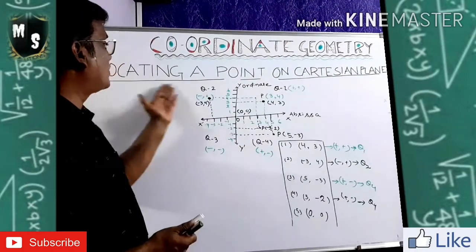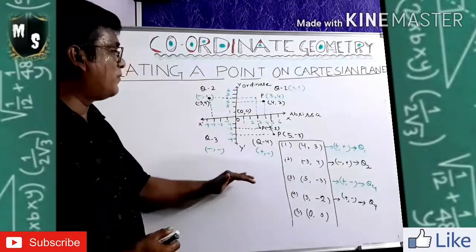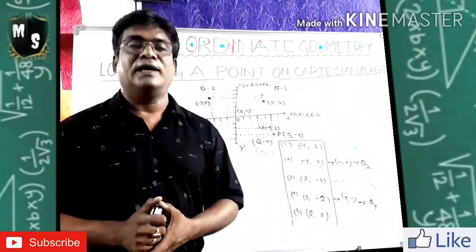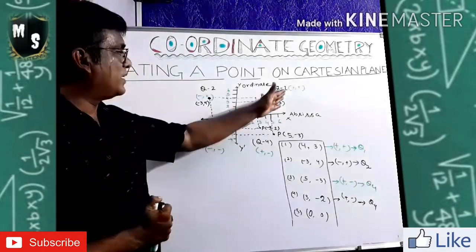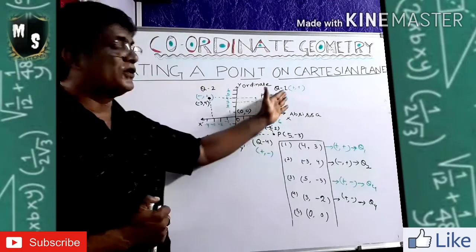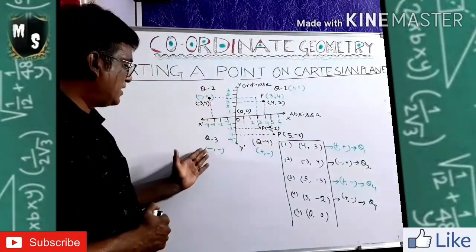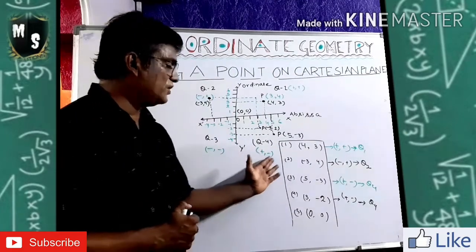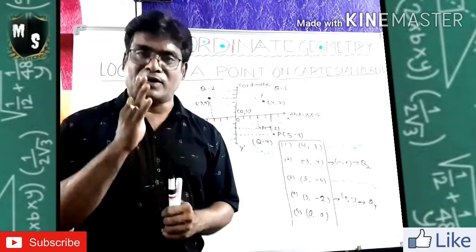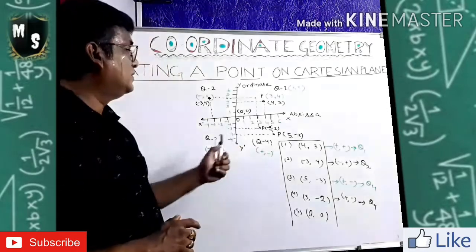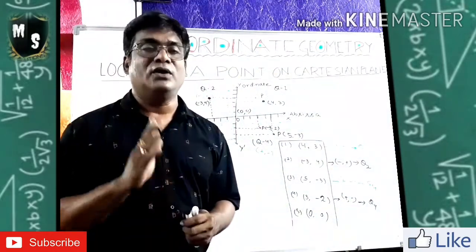I hope you understood how to locate a point on the Cartesian plane. The location of the point or the ordered pair depends on its symbols. Quadrant one is plus-plus, quadrant two is minus-plus, quadrant three is minus-minus, quadrant four is plus-minus. See your ordered pair, identify which quadrant it belongs to, then locate the point accordingly.